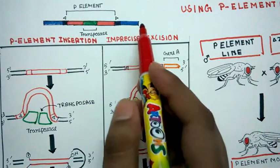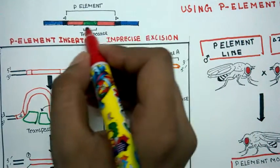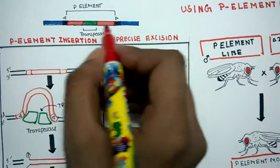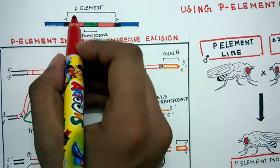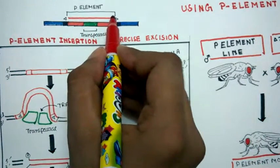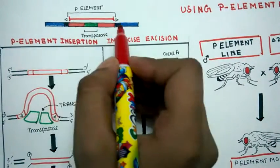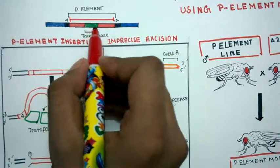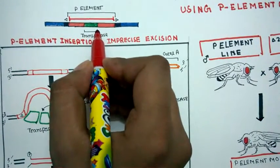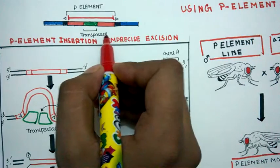And transposon means jumping genes. In this schematic, you can see P-element has a particular region which codes for a particular gene. And inside of it, there is a sequence which codes for an enzyme which is known as transposase.